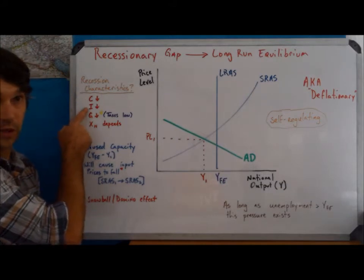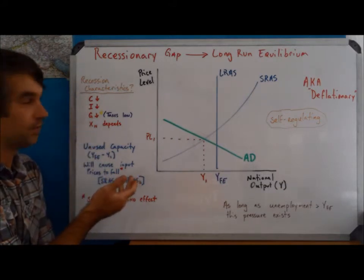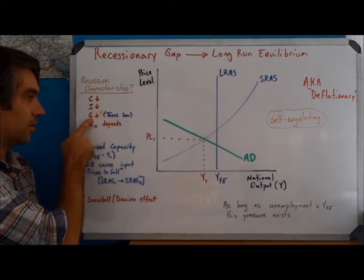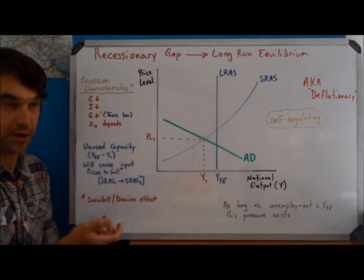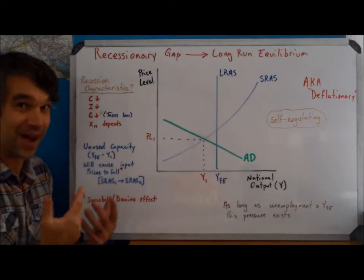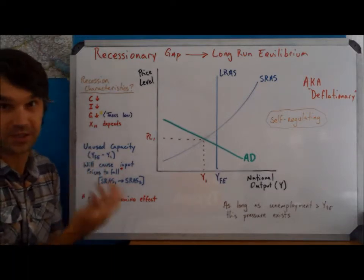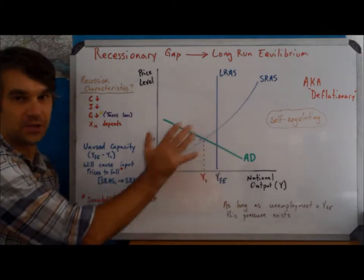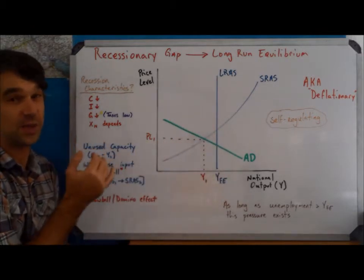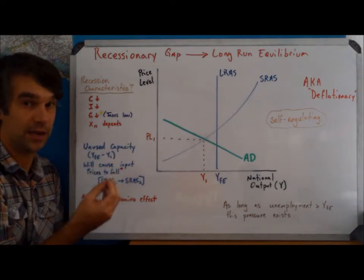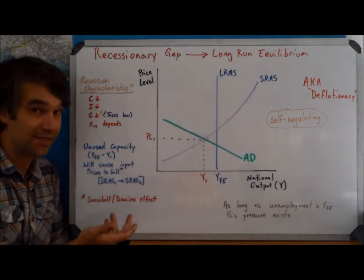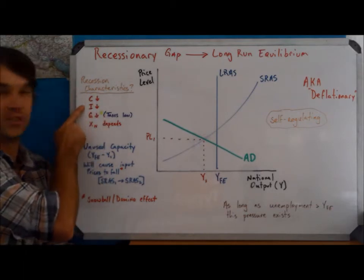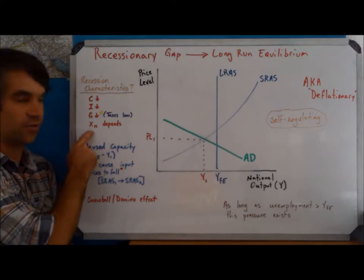It starts with investment being low. Businesses are afraid to spend money. If that's true, then taxes from the government should be low and they shouldn't be spending much money either. Obviously, in the modern day, governments do spend a lot of money during a recession, but that's because most of them don't ascribe to this belief. If governments only spent the amount of money that they brought in, which is called a balanced budget as opposed to a deficit budget, well then, government spending would also decrease because these two had decreased.